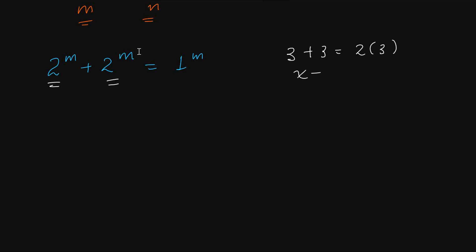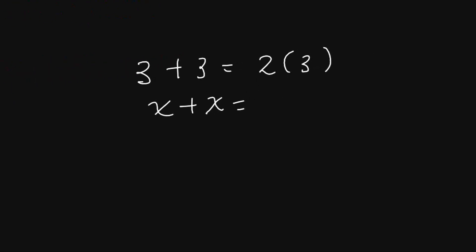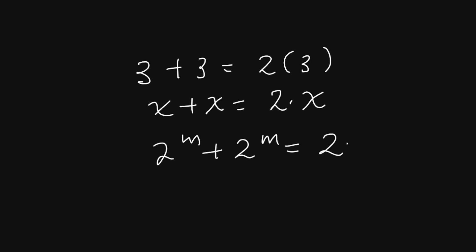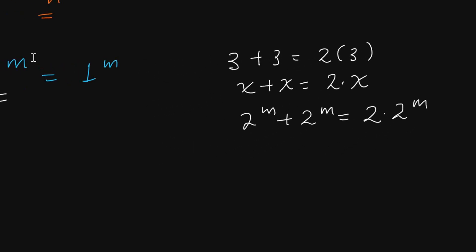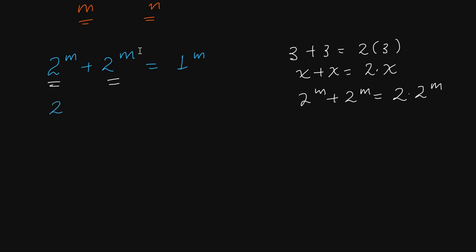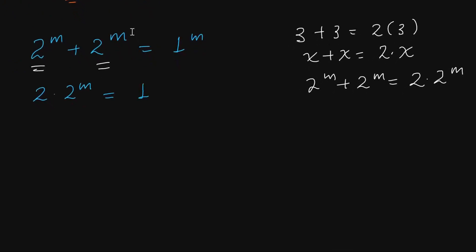In the same way that x plus x equals 2 times x for any number or variable, similarly 2 to the power of m plus 2 to the power of m equals 2 times 2 to the power of m. So the left side is equal to 2 times 2 to the power of m, and the right side is 1 to the power of m. We are looking for the value of m.